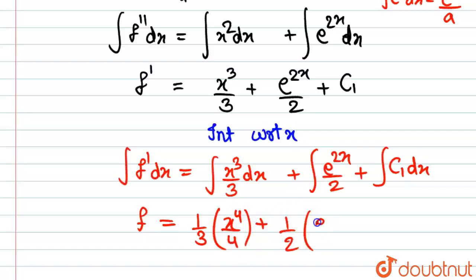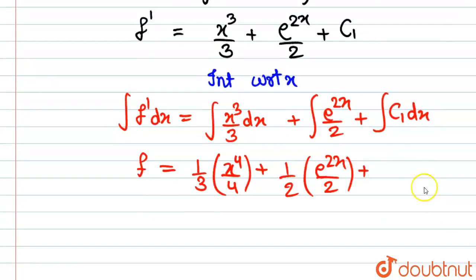Plus 1/2 taken outside, this will become e^(2x) upon 2 and this one will become c₁ times x plus constant of integration c₂.